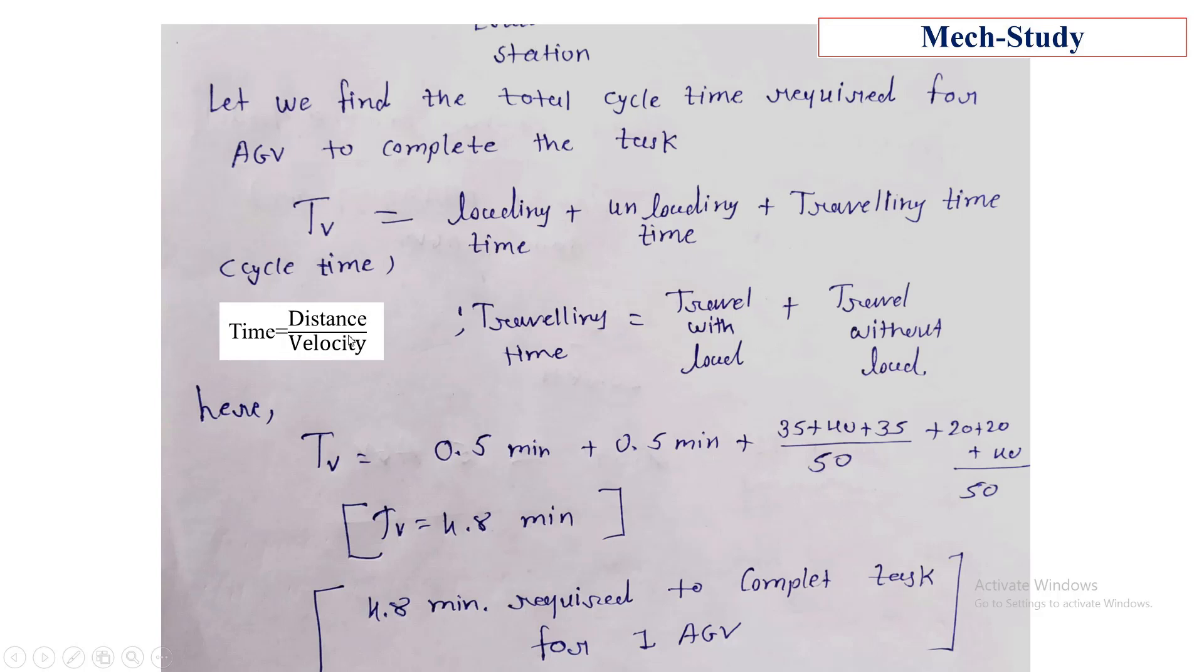By using the concept time equals distance divided by velocity, we get the total travel with load time is 35 plus 40 plus 35. Hence, time required to travel with load is (35 + 40 + 35) divided by 50. In the same way, travel without load is (20 + 20 + 40) divided by 50.